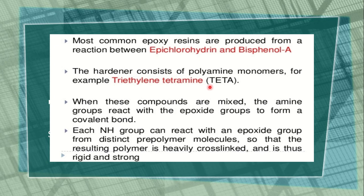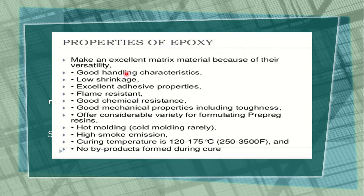The resulting polymer is heavily cross-linked and is thus rigid and strong. These are the basic starting materials for the preparation of epoxides. Moving to the properties: epoxides make an excellent matrix material because of their versatility, good handling characteristics, and low shrinkage.